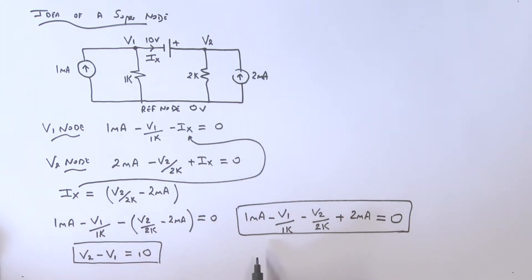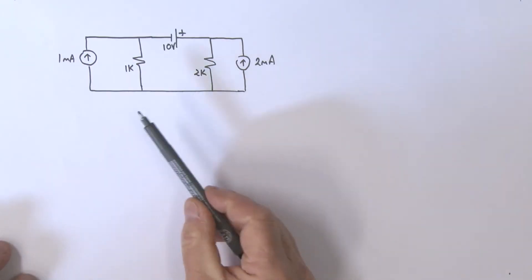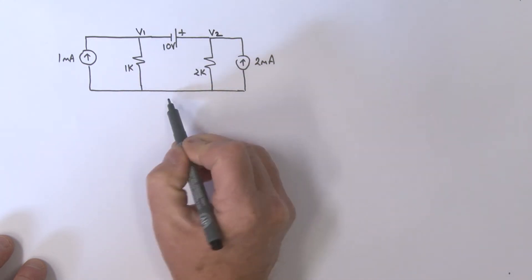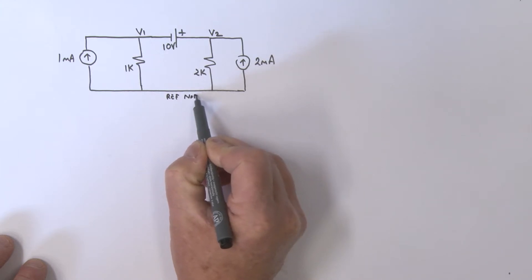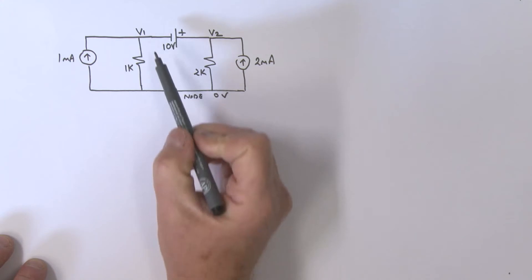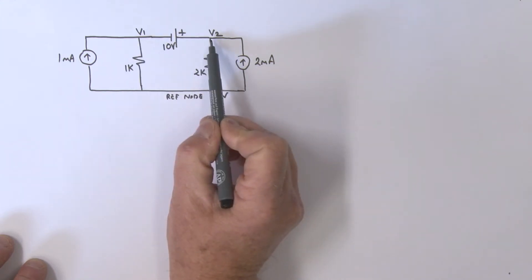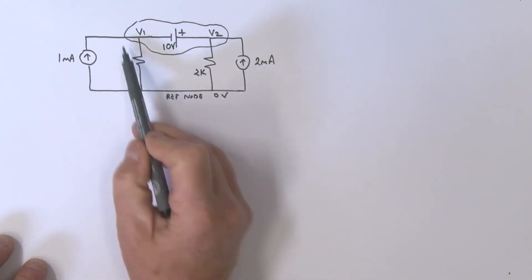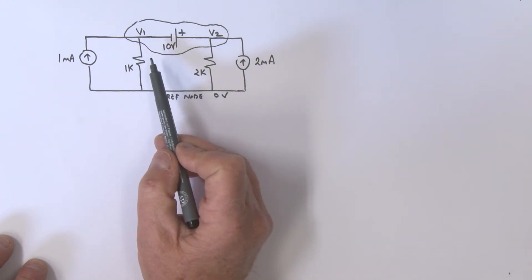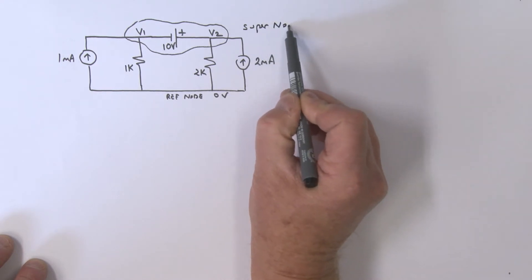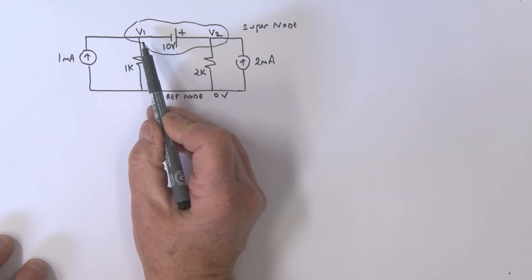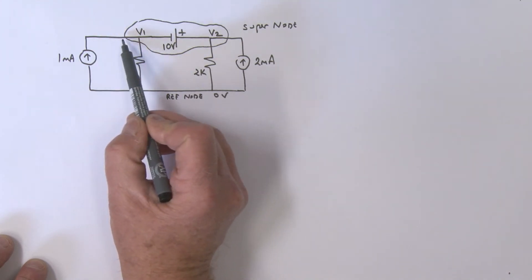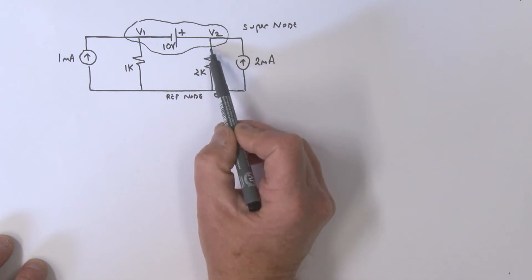There is another way to approach this problem. We have the V1 node, the V2 node, and the reference node at zero volts. But we could approach this by combining these two nodes together — putting a circular boundary around them — and calling that combination a supernode. We treat it like one single node and look at what's going into and coming out of it.